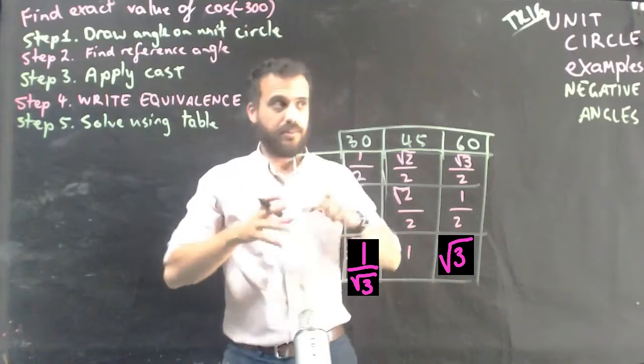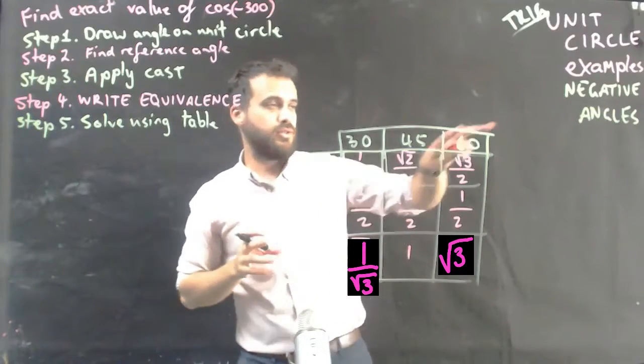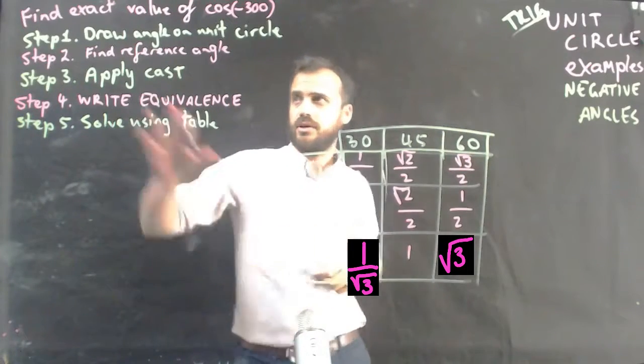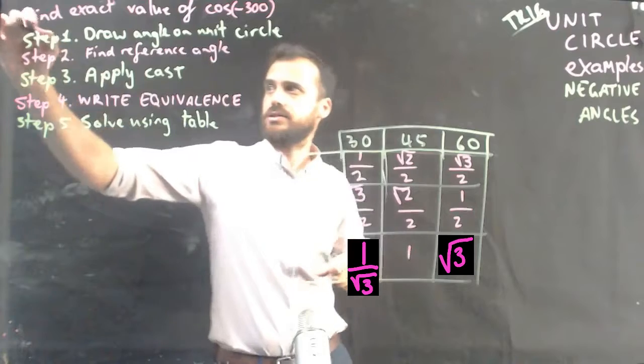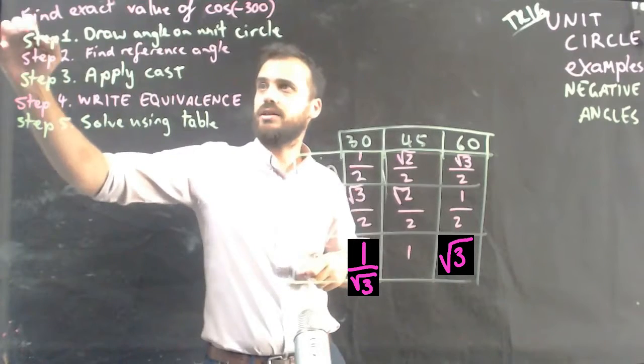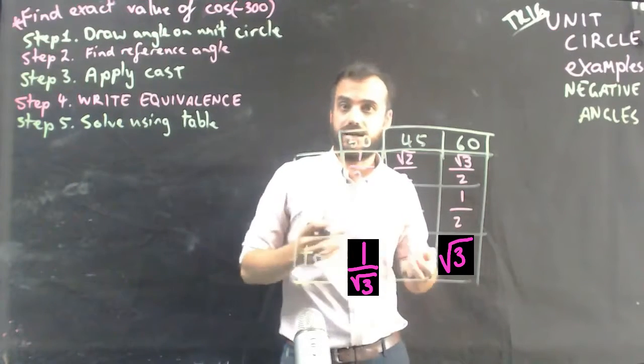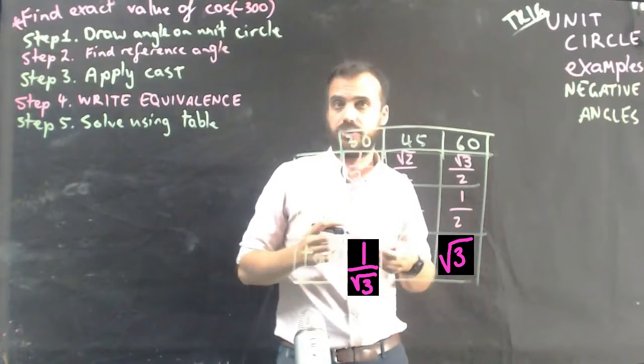Okay, so you've got the hang of that, but now you need to do negative angles. For instance, find the exact value of cos negative 300.